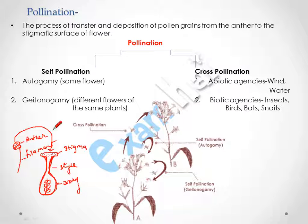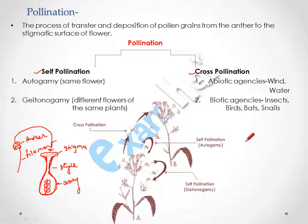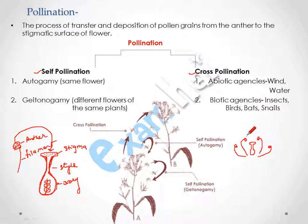Pollination is of two types: self-pollination and cross-pollination. In self-pollination, it can be autogamy or geitonogamy. In autogamy, the pollination occurs within the same flower — a bisexual flower having both male and female reproductive organs. The transfer of pollen grain takes place from the anther of the same flower to its stigma.